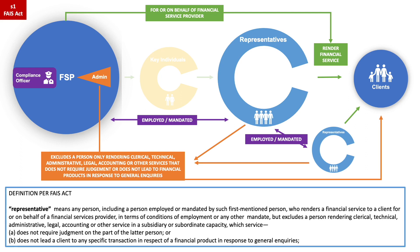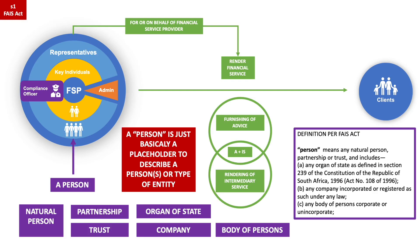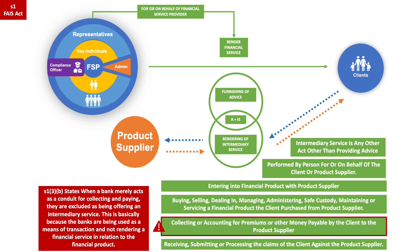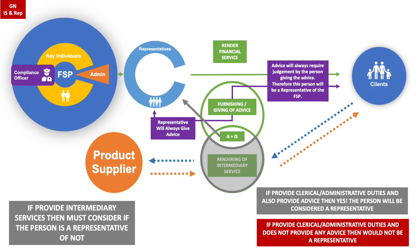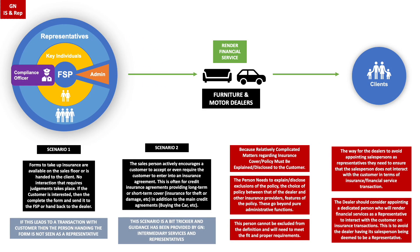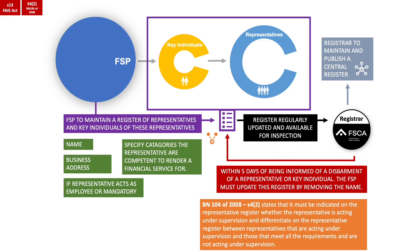Let's go through a final overview of what has been covered. We covered the definition of a representative as well as the definition of a person as it relates to a representative. An important point to note is that any representatives that are not natural persons are called juristic representatives. We then covered what furnishing or giving advice and rendering of intermediary services mean, the guidance note on intermediary services and representatives, specific guidance dealing with furniture and motor dealers when providing intermediary services, and the FSP's requirements to maintain and update a register of representatives. We hope you enjoyed the video — please make sure to check out our other RE videos.